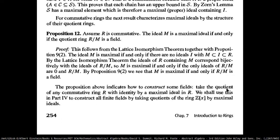By proposition, M is maximal if and only if R mod M is a field — because that's what you need to have a field: the only ideals are the null and the unit. The proposition above indicates how to construct some fields — you take the quotient of any commutative ring R with identity by a maximal ideal in R.